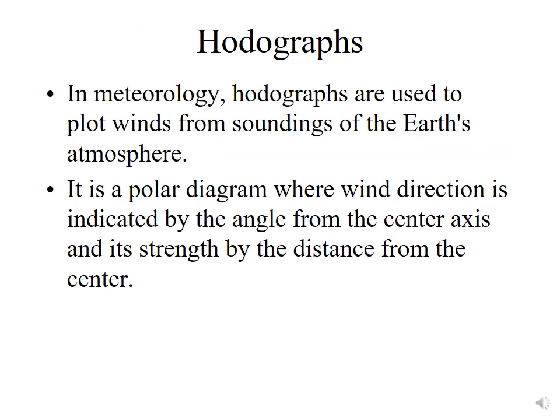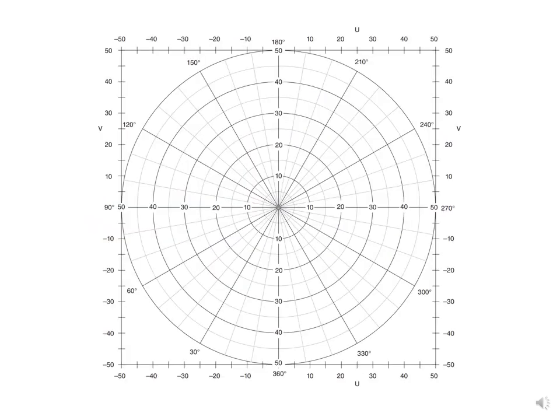Now we introduce the concept of a hodograph. In meteorology, hodographs are used to plot the winds from soundings of the Earth's atmosphere, giving a visual graphical representation of the winds and how they change with height. It's a polar diagram where wind direction is indicated by the angle from the center axis and the strength of the wind is shown by the distance from the center. Concentric rings are labeled 10, 20, 30, 40, 50 — you can use meters per second or knots depending on the data.